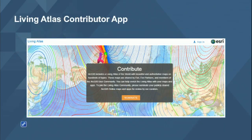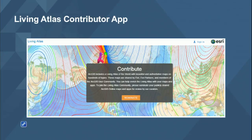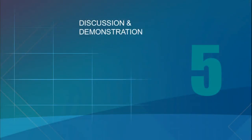One extremely useful tool for anybody managing a portal or organization is the Living Atlas Contributor app. This application analyzes the content you add to your organization and tells you how you've done with all those checklist points, grading your content on a scale — it says you did pretty well with the thumbnail but not so well on the description. This is a way to run a sanity check on your content. Even better, it can help you ensure that others publishing to your organization are doing what they need to do to get content shared out.